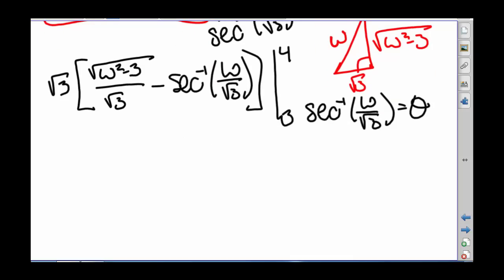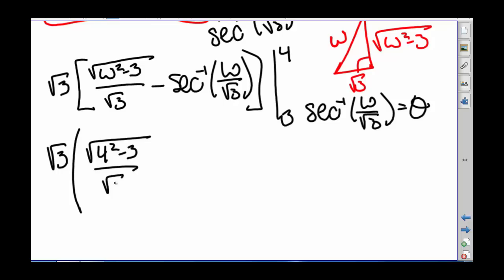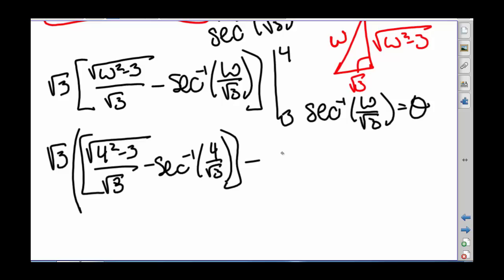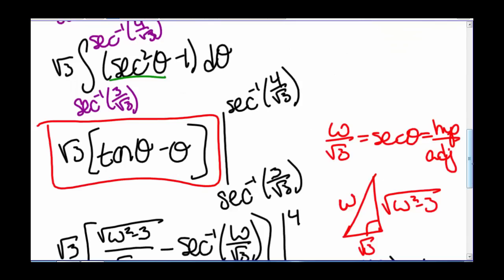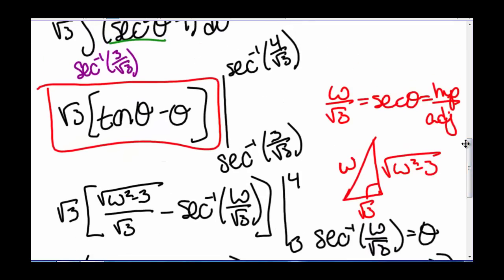Plugging the bounds in, we get square root of 3 times the quantity: the square root of 4 squared minus 3 divided by square root of 3, minus the inverse secant of 4 divided by square root of 3, minus the quantity: square root of 3 squared minus 3 divided by square root of 3, minus the inverse secant of 3 divided by square root of 3. Note that we could have plugged in our theta bounds directly and found tangent of the inverse secant of 4 divided by square root of 3, which is a valid but different approach.